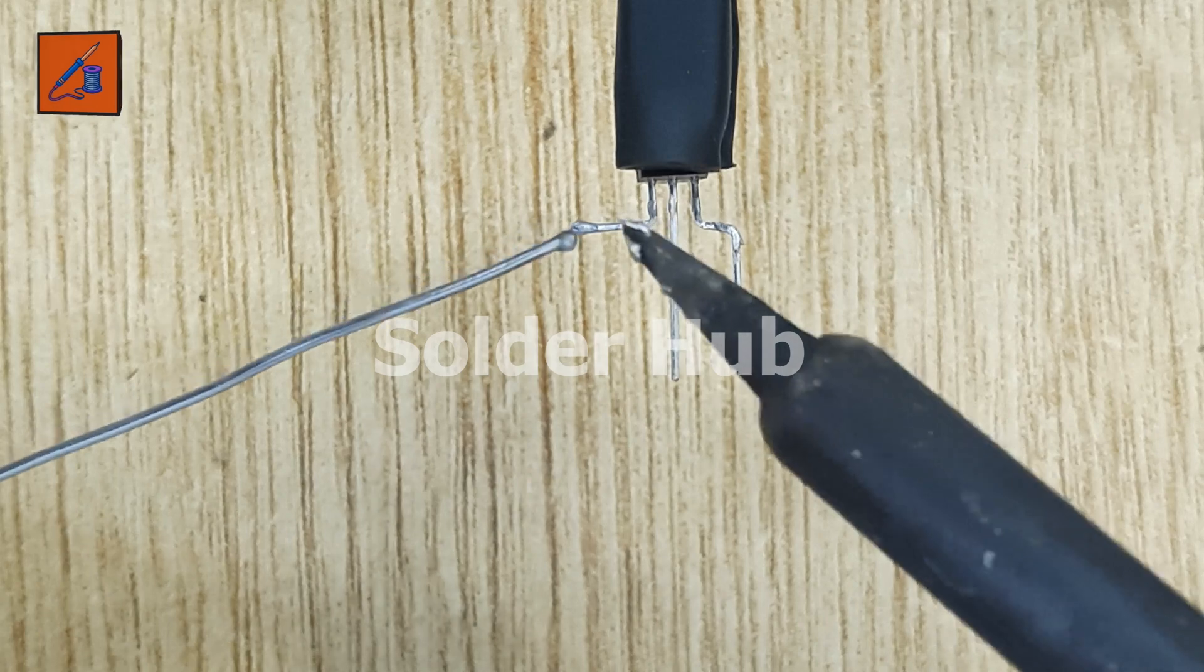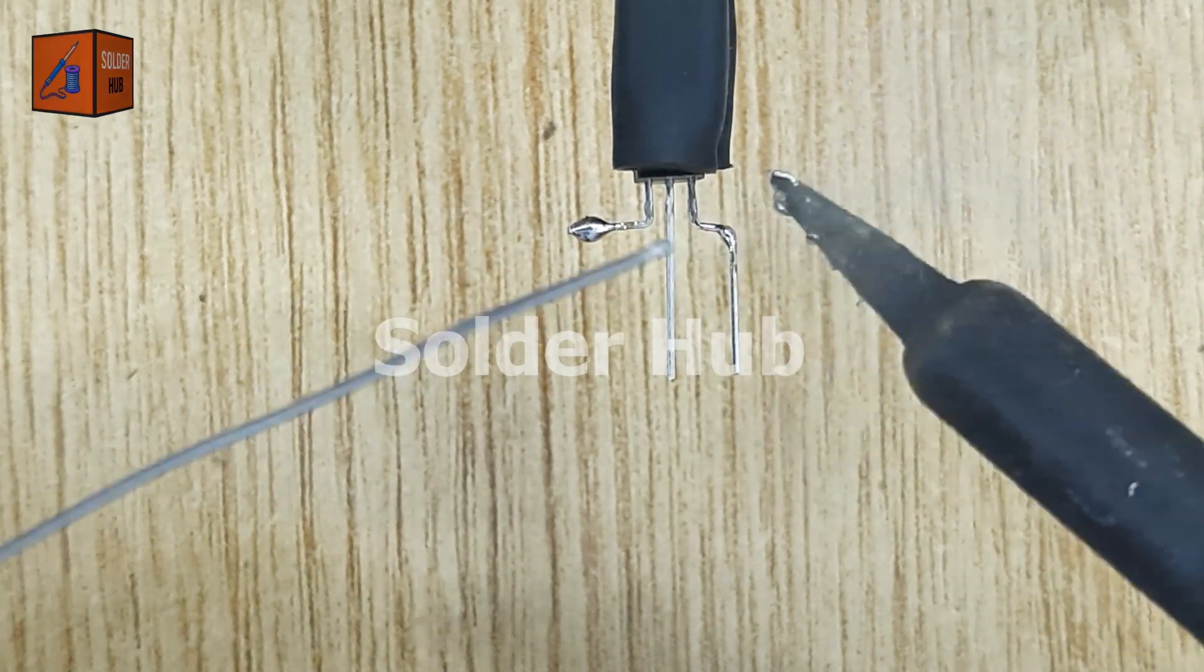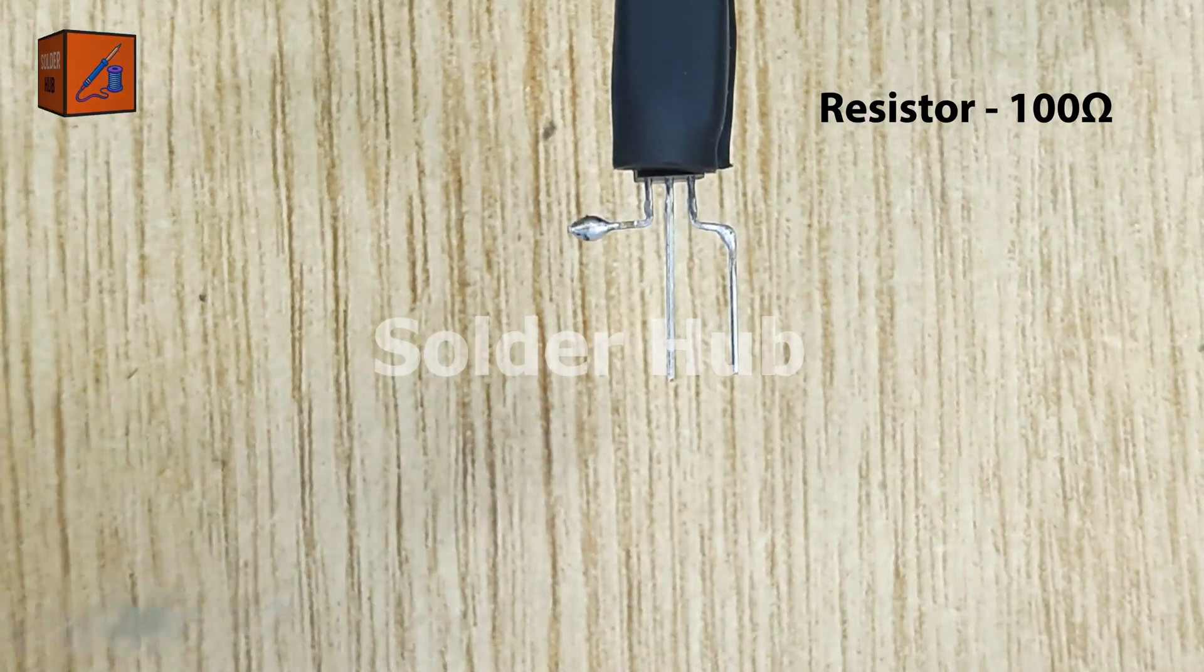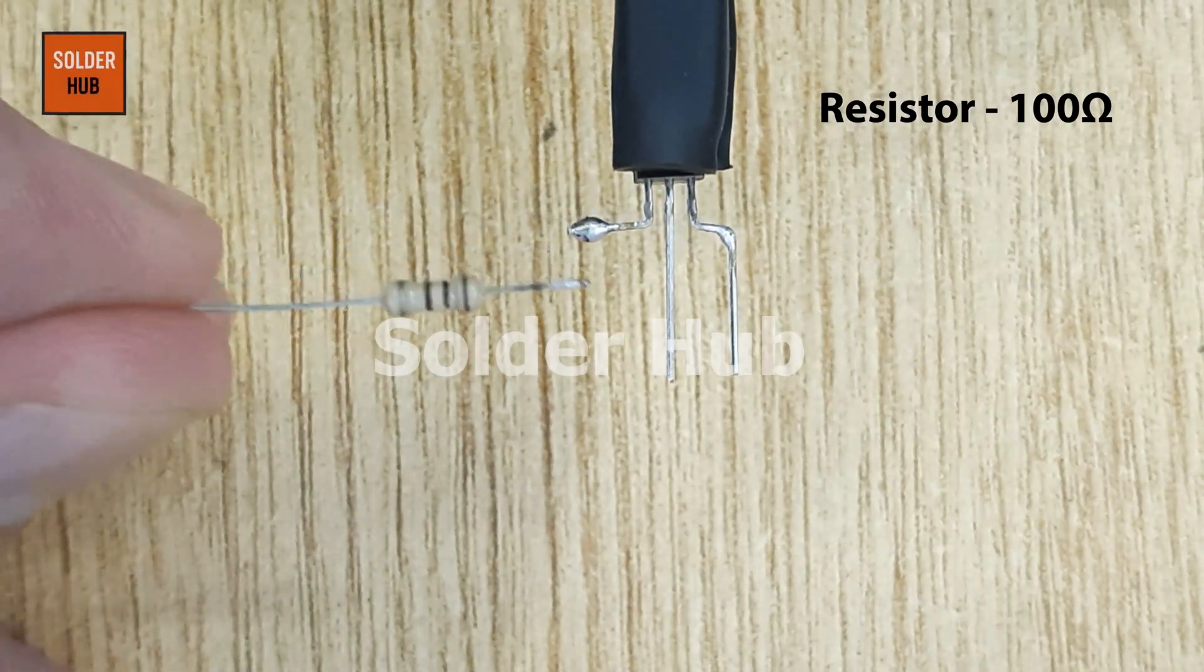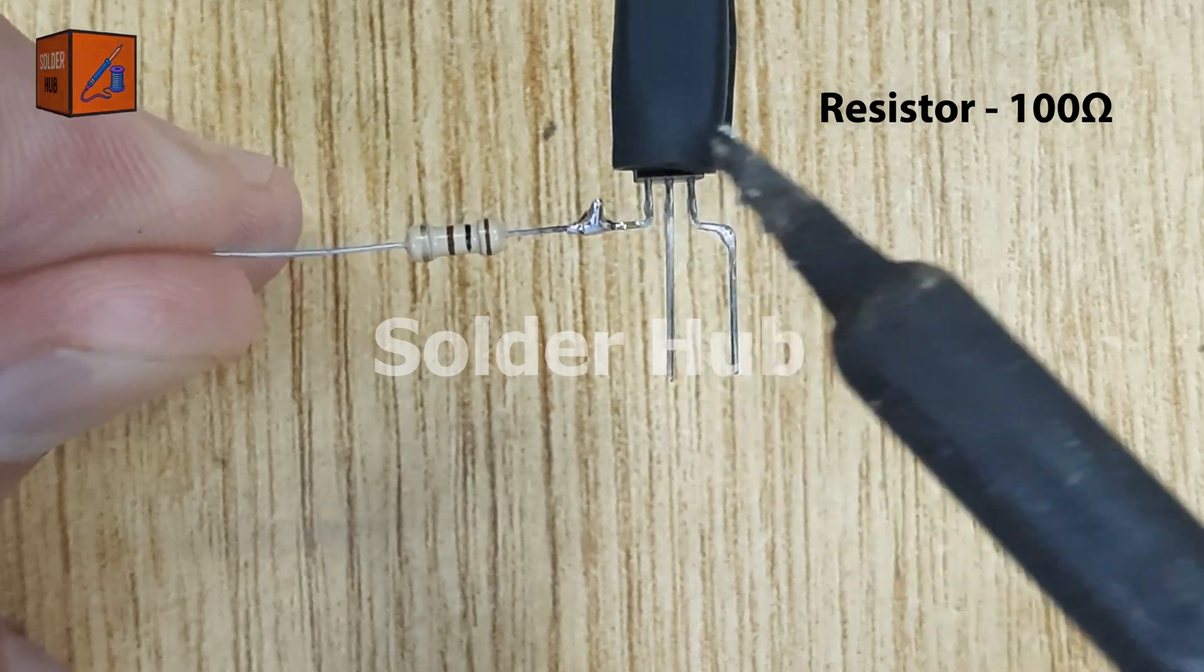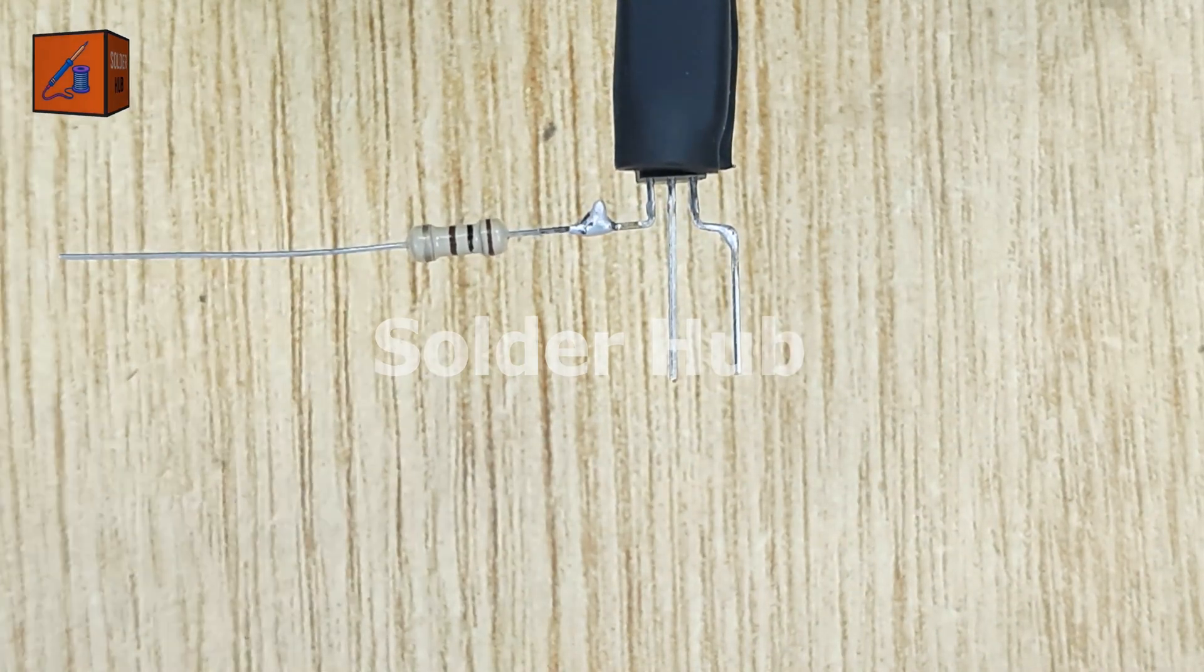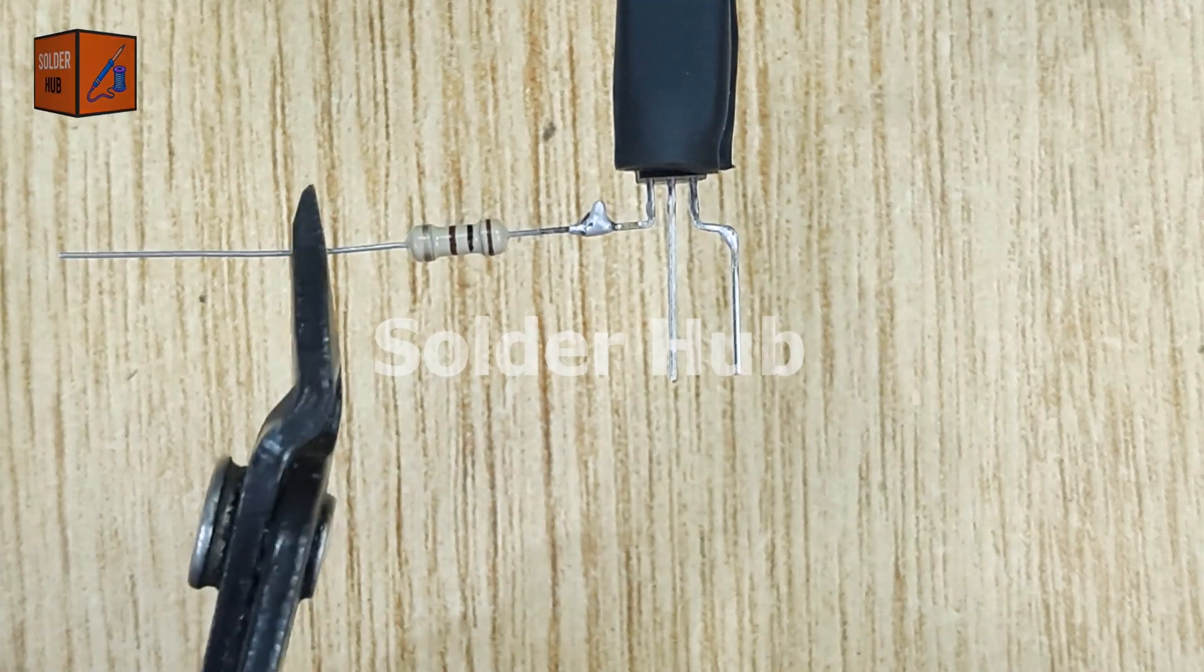To start, I apply a small amount of solder to the collector and emitter pins of the BC547 transistor. Next, I take a 100-ohm resistor and solder one of its pins directly to the collector pin of the transistor. After the connection is firm, I trim off the excess pin from the resistor for a neat finish.